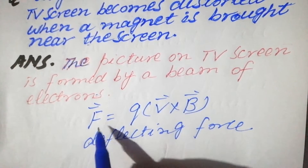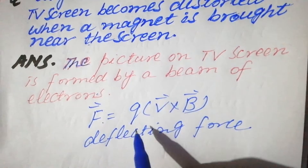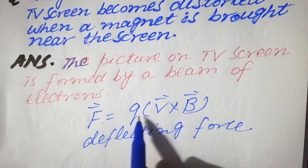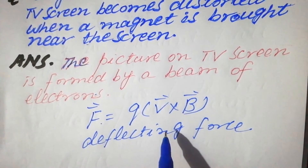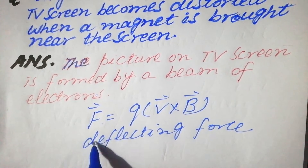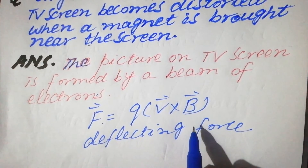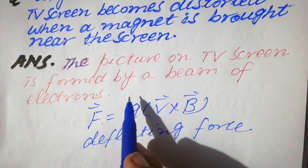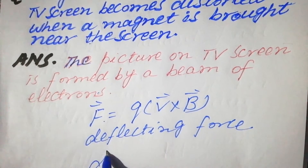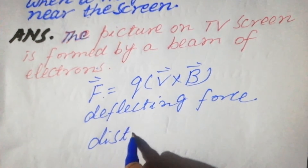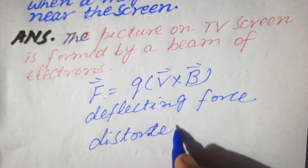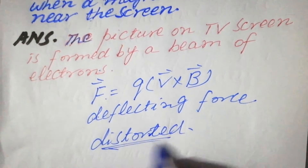To summarize: the picture on the TV screen is due to a beam of electrons. When a magnet is brought near the screen, the magnetic force given by F = qv × B acts on these electrons. Since it is a deflecting force, it deflects the electrons and the picture becomes distorted. That is the right answer.